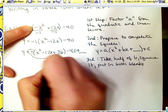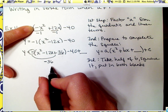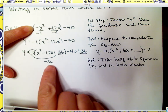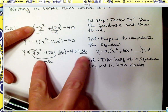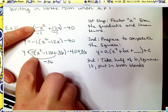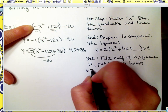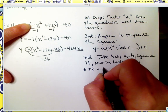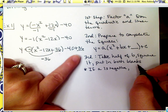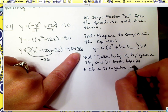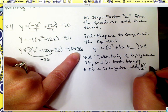What we really introduced to the problem that was not already there is a negative 36. To counter that, we are going to add 36. So if our a value is negative, then we're going to add. And if our a value is positive, then we'd end up subtracting. So: if a is negative, we add half of b squared at the end; if a is positive, we subtract it.